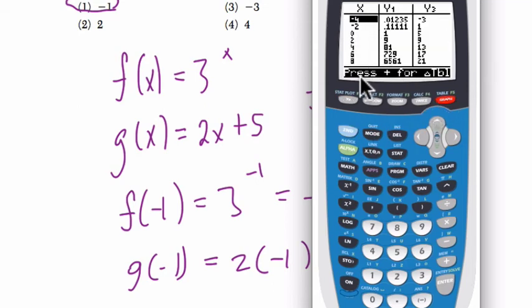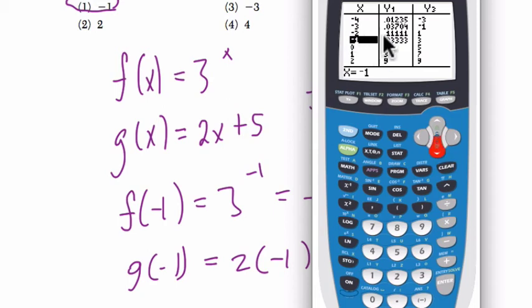So just to confirm, I'll change my interval, press plus, and we'll go up by 1. So you can see and confirm, yeah, at negative 1, the exponential function is a third, and the other function, linear function, is 3.